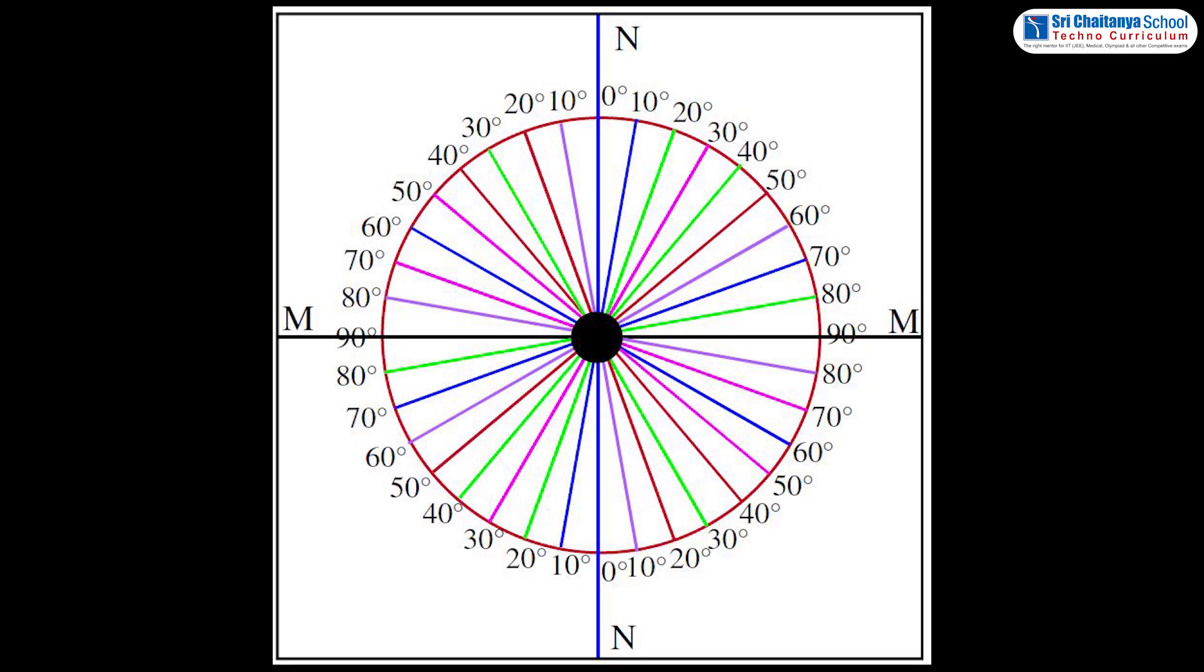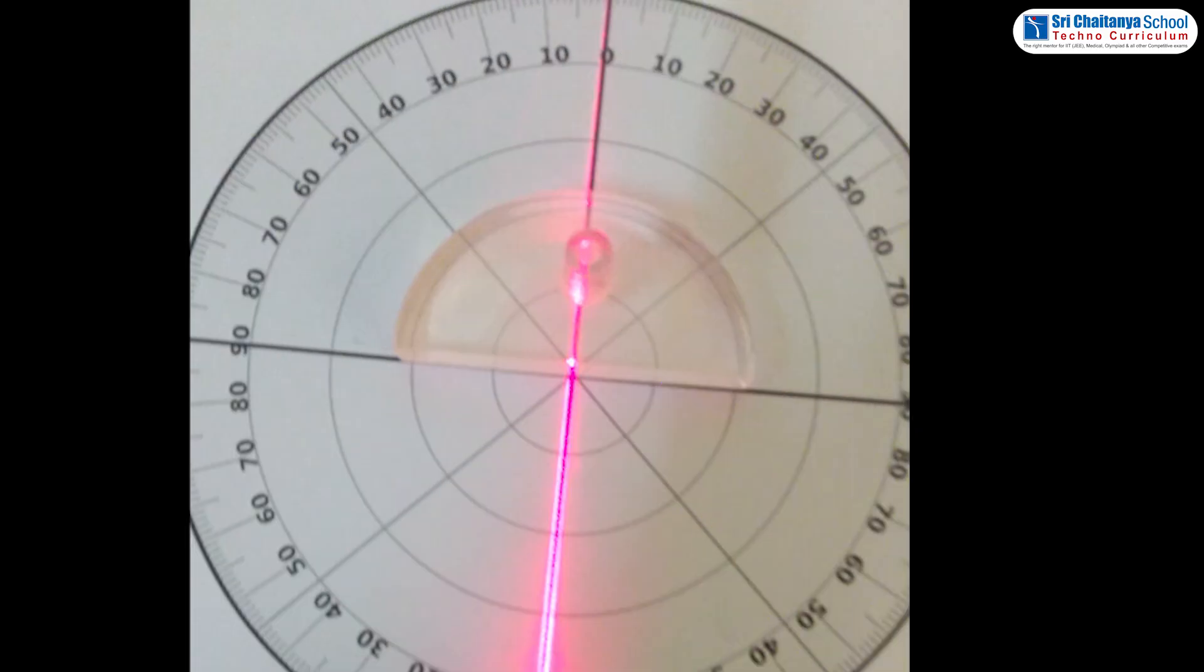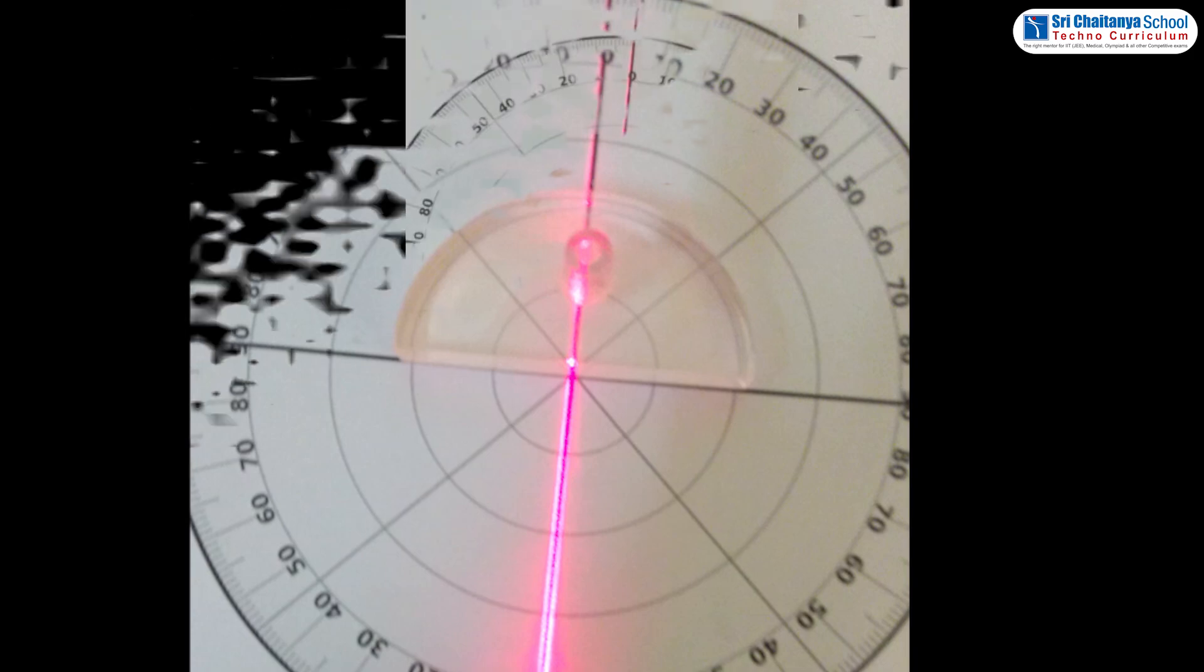With the help of the protractor, mark the angles from 0 degrees to 90 degrees on both sides of the line NN as shown. Now, place semi-circular glass disc so that its diameter coincides with the interface line MM and its center coincides with the point O. Take laser light.